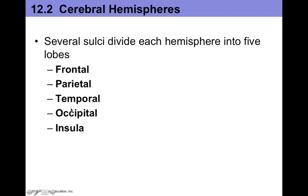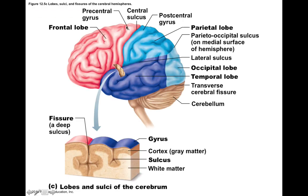The frontal, parietal, temporal, occipital lobes and the insula are all involved with a variety of functions, and you have these lobes on each cerebral hemisphere — so right and left frontal lobes, right and left parietal, and so on. The lobes are differentiated anatomically: the central sulcus separates the frontal from the parietal lobe, the lateral sulcus separates the temporal from the frontal lobe, the parieto-occipital sulcus separates the parietal from the occipital lobe, and the transverse cerebral fissure separates the cerebrum from the cerebellum.